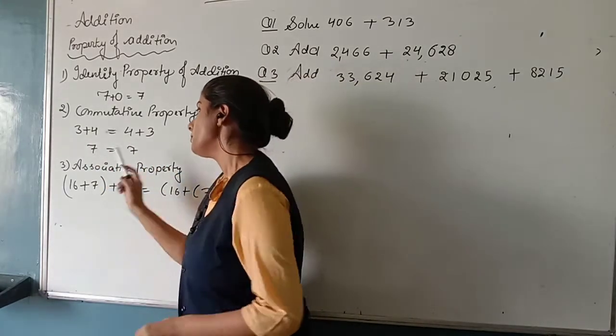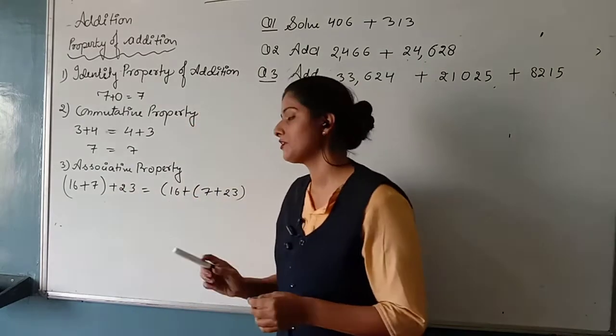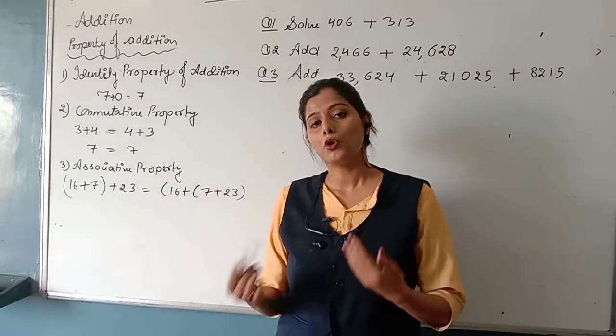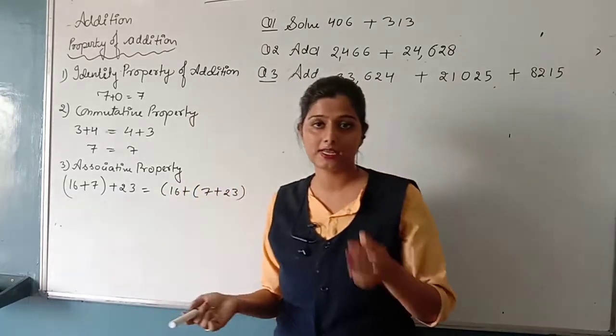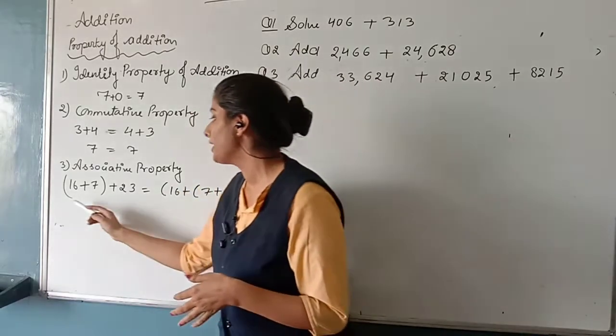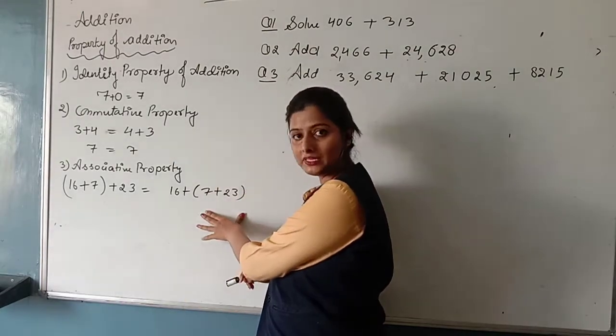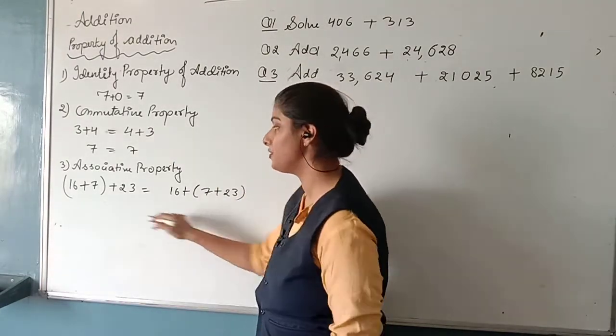Next is associative property where two or more numbers are there and some numbers are in a group. So here the group of the numbers will be the same but the answer will be the same.